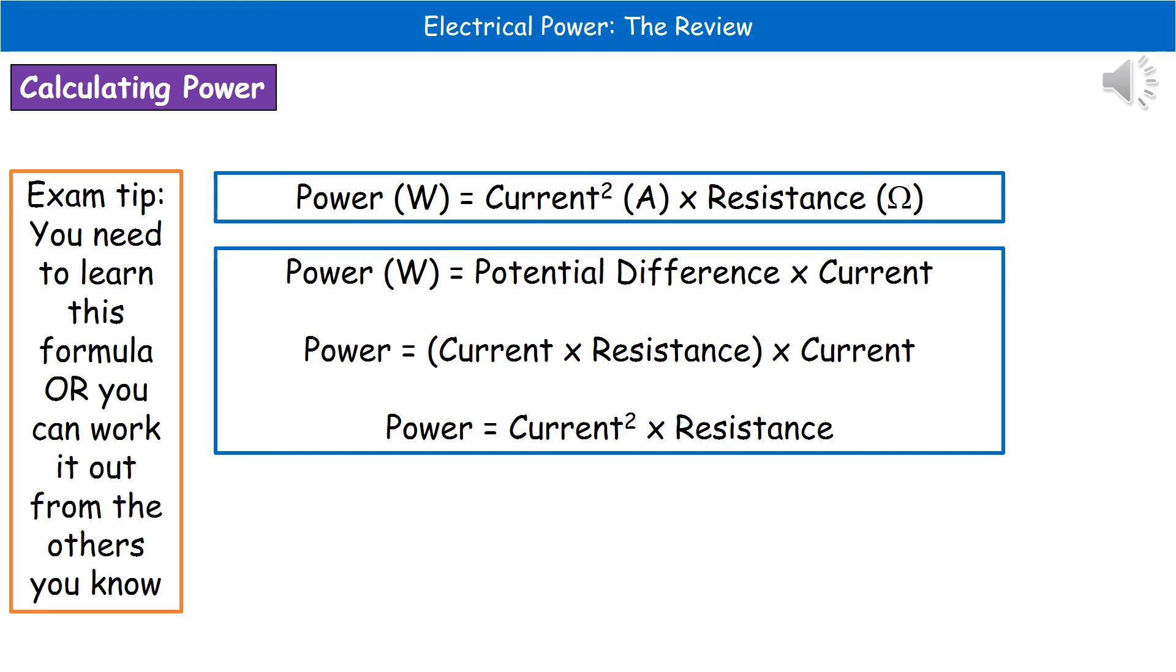Because we know that power is potential difference times current, and we know that to calculate the potential difference, it's current times resistance. If you then put those together, use a few of your basic math skills, then that tells us that power is the current squared times resistance.